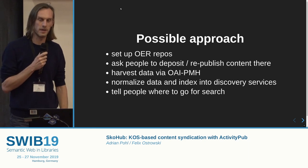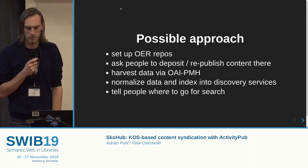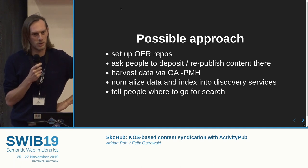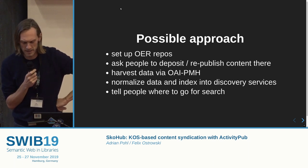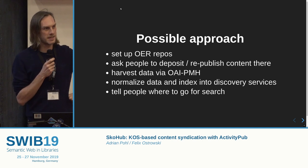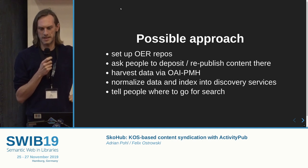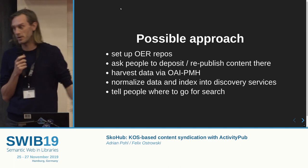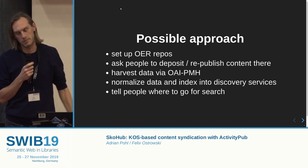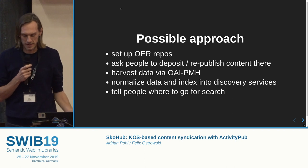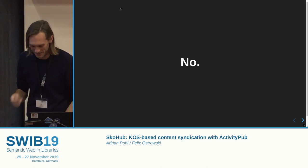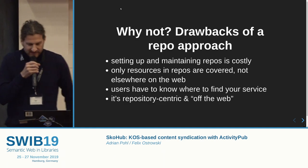One possible approach we know quite well — and there are a couple of projects doing this — is: first, we set up an OER repository, then in the same way as in open access we ask people to deposit things there, or republish content they've already put somewhere else. Then we harvest all the data from these various repositories, normalize and index them, and build a discovery service on top.